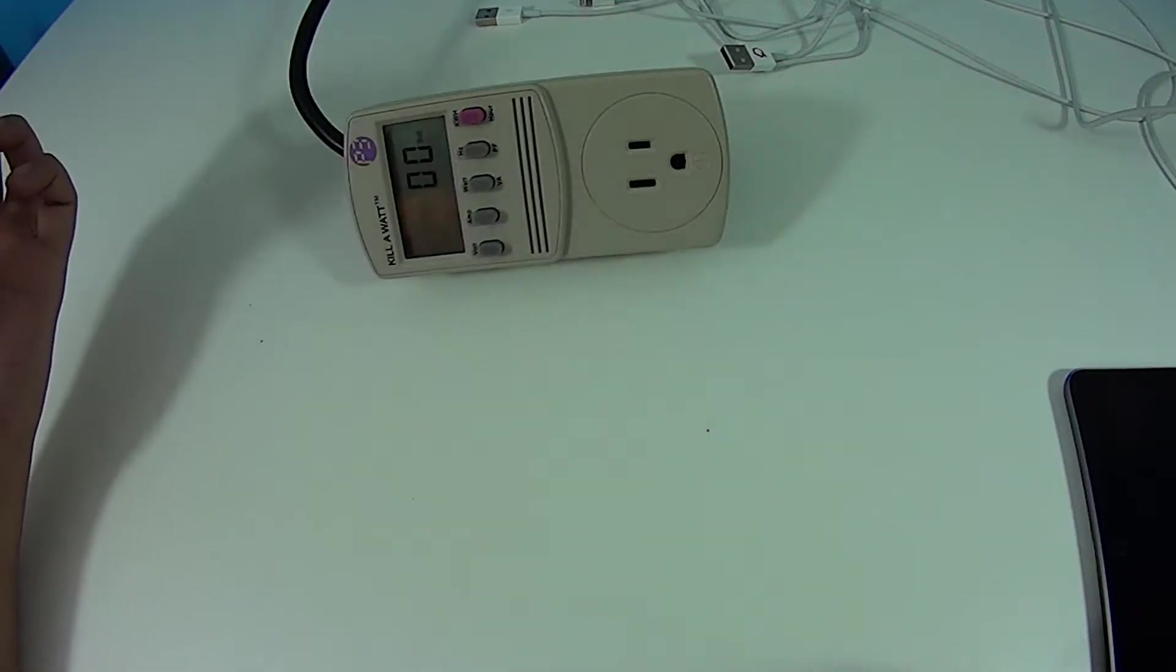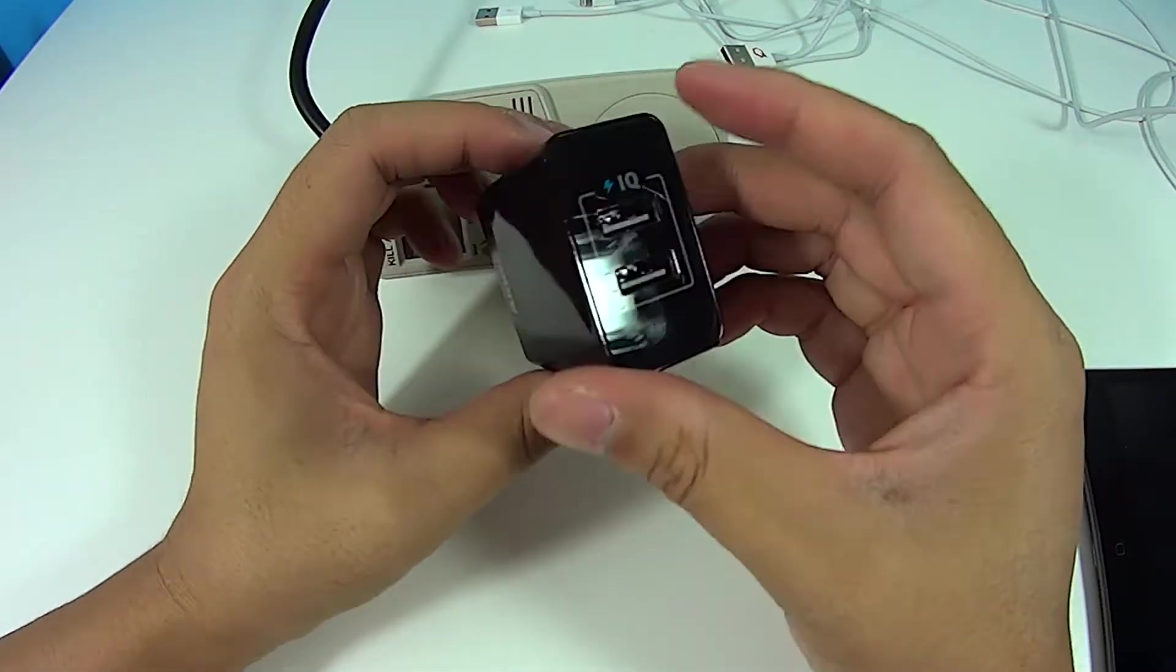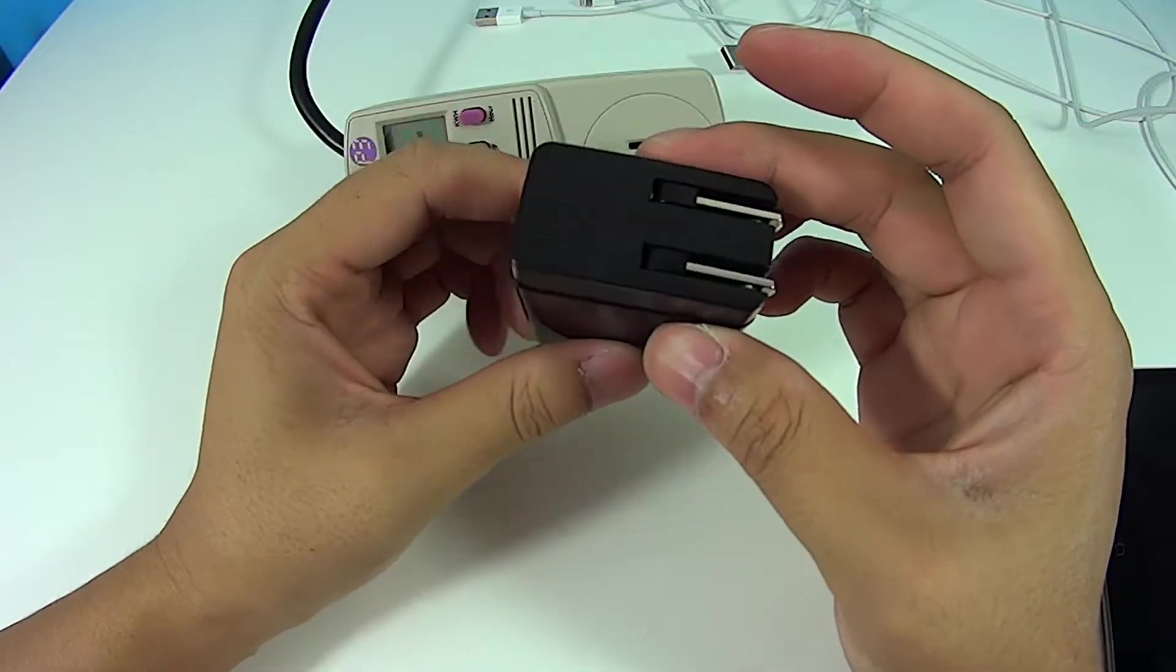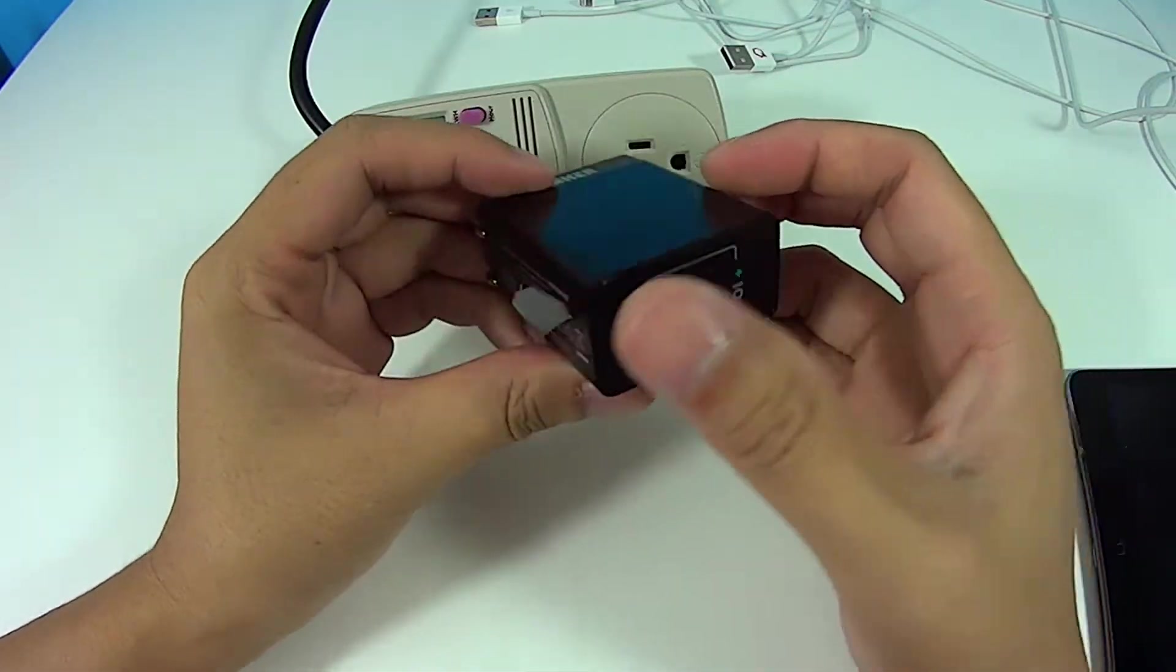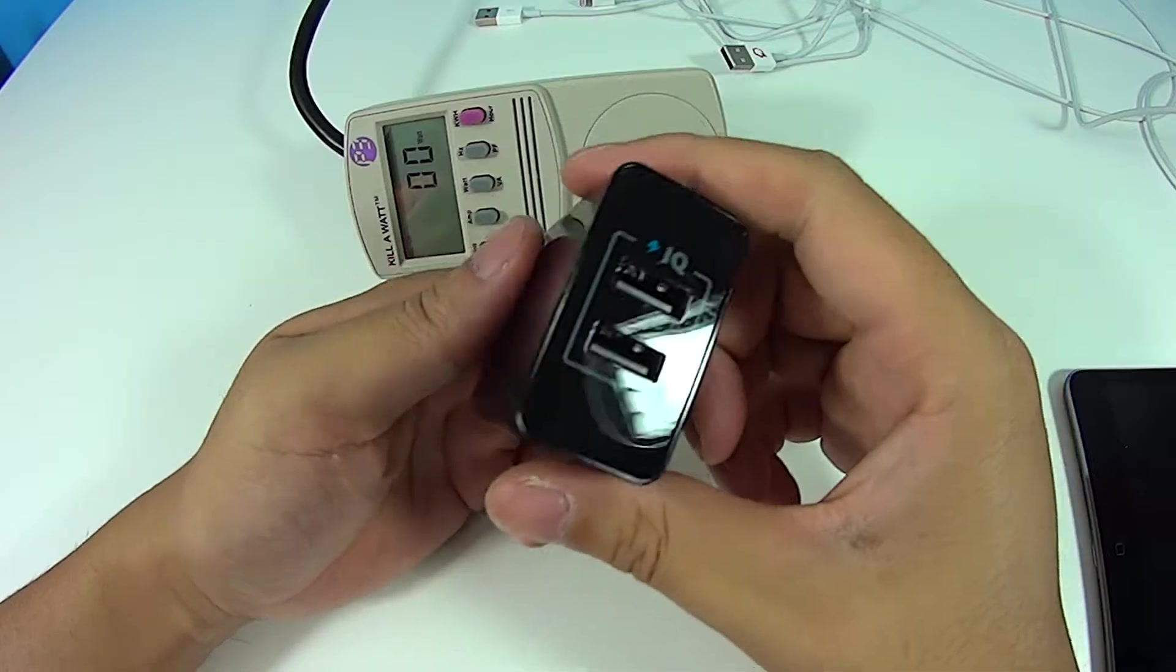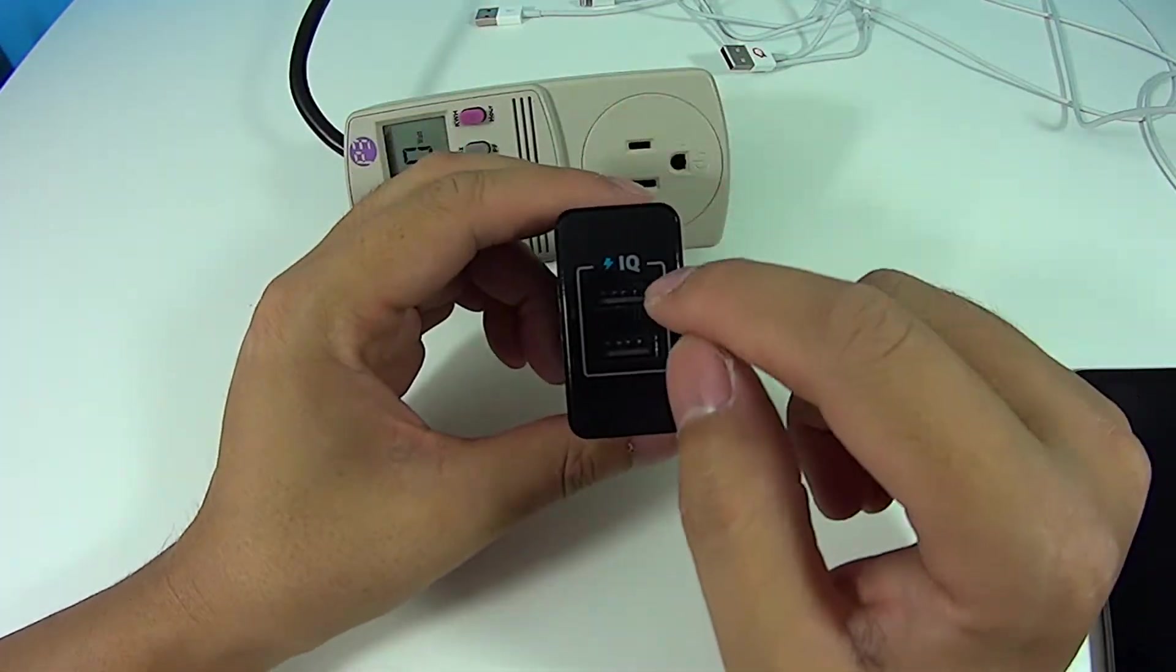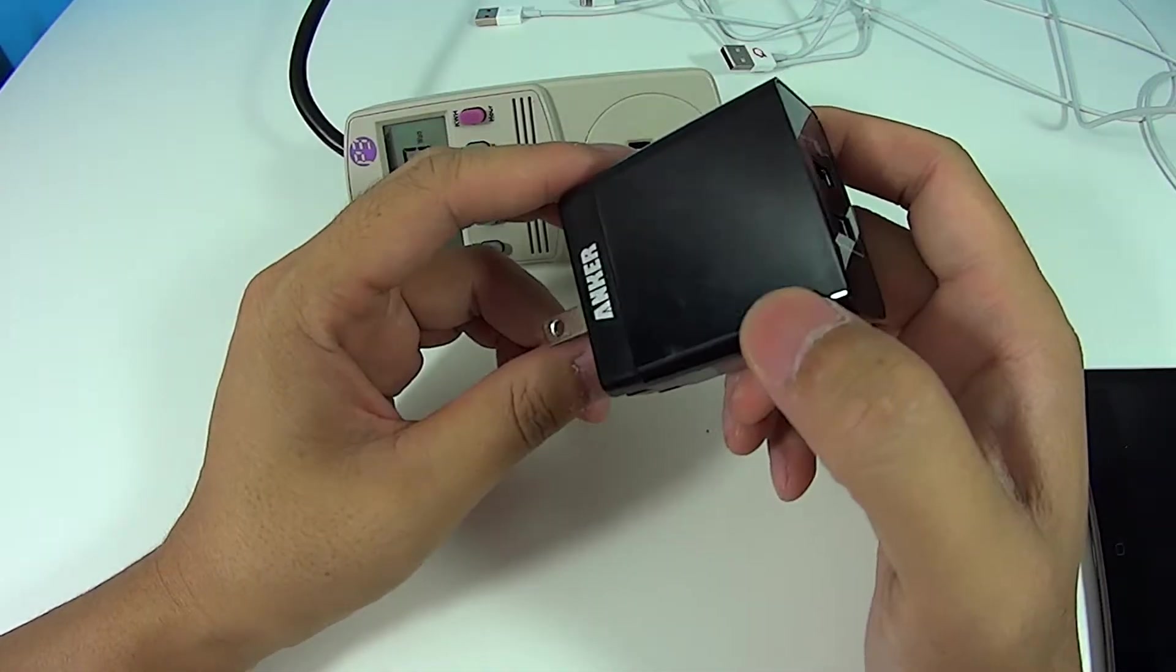Hello YouTubers, today we're testing the Anker 2-port IQ Type 20-watt dual port iPhone, iPad, Samsung charger, basically a USB charger. They have the special feature for IQ charging which detects what type of device it is and is supposed to charge quicker.